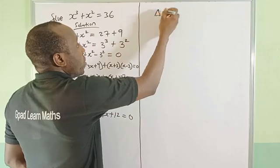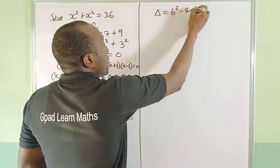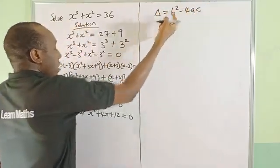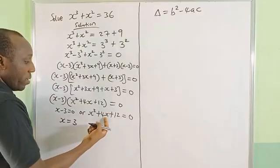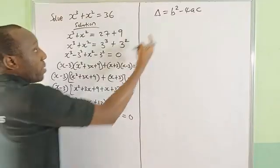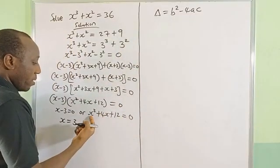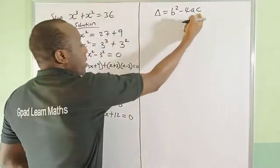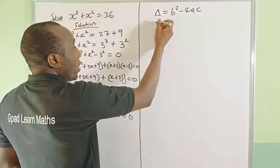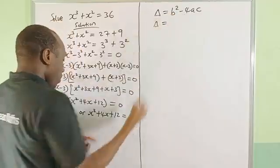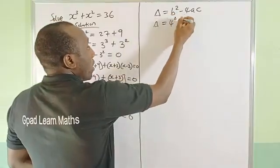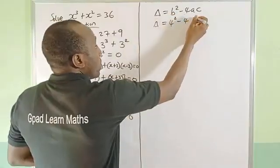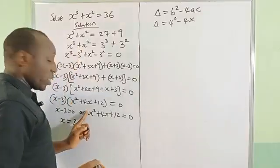From discriminant, which is b² - 4ac. Now b is the coefficient of x, which is the middle term. a is the one with leading power, and c is the constant term. So let's test this. b is 4, that's 4² - 4 times a, which is 1, the coefficient of x².